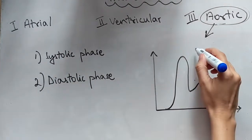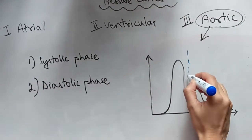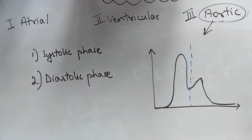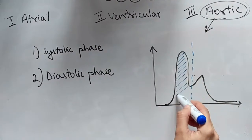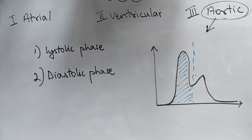This line which is not so straight shows the separation between the two phases. The highlighted bit is the systolic phase and the other one is the diastolic phase.